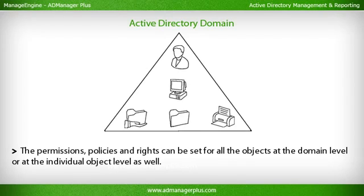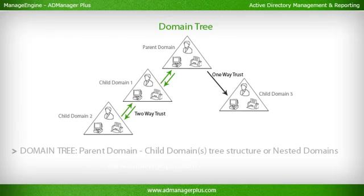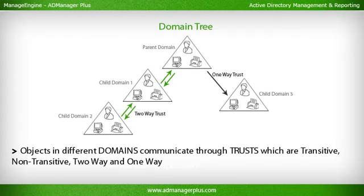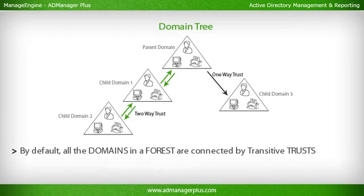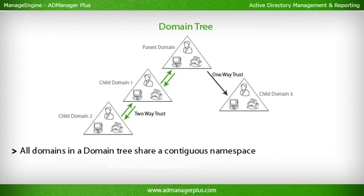Permissions, policies, and rights can be set for all the objects at the domain level or at the individual object level. A domain tree consists of a parent domain and child domains in a tree structure, or nested domains. Objects in different domains communicate through trusts, which are transitive, non-transitive, two-way, and one-way. By default, all domains in a forest are connected by transitive trusts. All domains in a domain tree share a contiguous namespace.